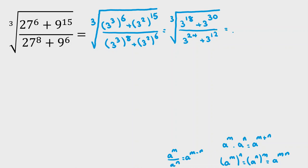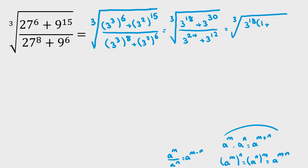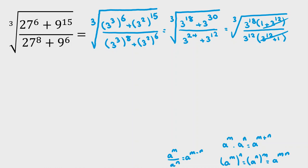We've tried to factorize — factor out 3 to the 18. It will be 1 plus, using this part: 3 to the 30 is 3 to the 18 times 3 to the 12. Over 3 to the 12, factorize — it will be 3 to the 12 plus. Now we can cancel these two things.